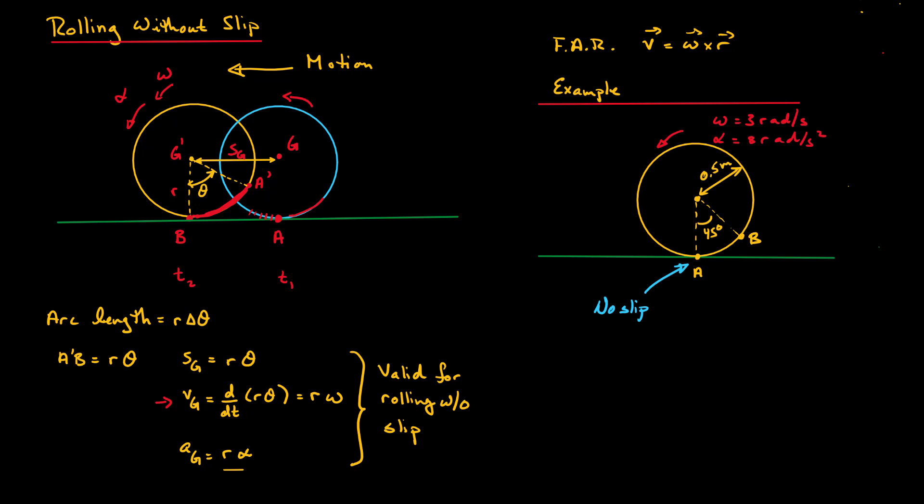Let's look at an example to solidify this concept. We have a disk that is rolling and accelerating with an angular velocity of 3 radians per second counterclockwise and an angular acceleration of 8 radians per second squared. It is rolling without slip at point A, and we are asked to find the acceleration at point B. This is general planar motion — it is translating and rotating — but we've just developed important relationships for rolling without slip.